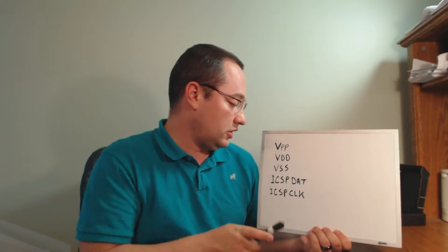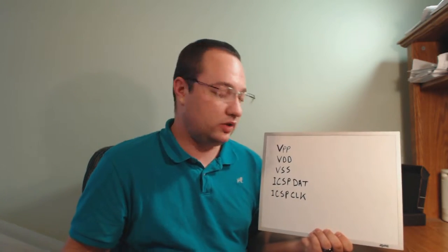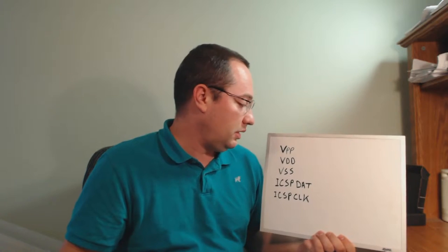The pinout for the PICkit 3 is VPP, VDD, VSS, ICSP DAT and ICSP CLK. Some of those pins we already know, VDD and VSS which is power and ground, but what the hell is VPP?